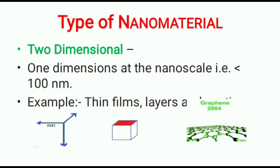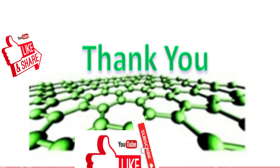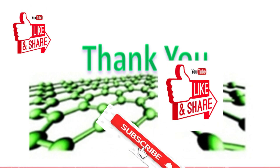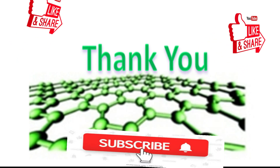Next is two-dimensional nanomaterial: when one dimension — length, breadth, or height — is less than 100 nanometers, it is known as two-dimensional nanomaterial. An example is thin film layers or coatings. In the images, the red color coating is due to nanometer-range thickness. Another example is graphene. If you like this video, please like and subscribe to the channel. Thank you.